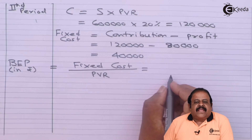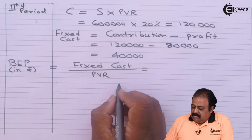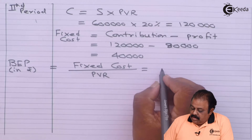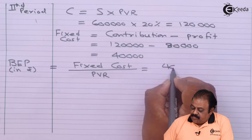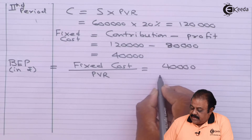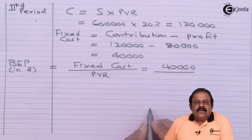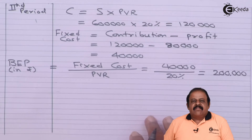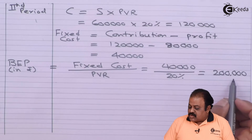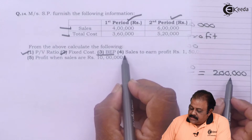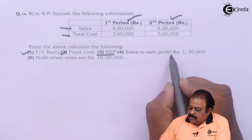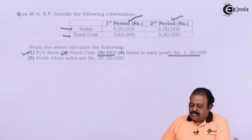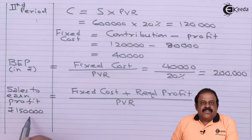The formula for break-even point is fixed cost divided by profit volume ratio. Fixed cost is forty thousand, divided by PV ratio of twenty percent, giving a break-even point of rupees two lakhs.